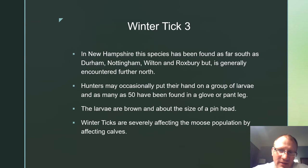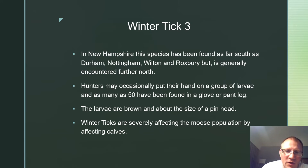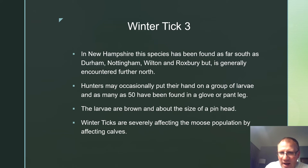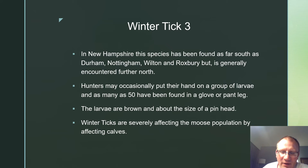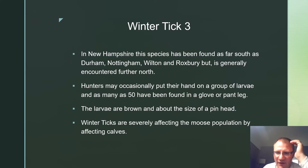In New Hampshire, the winter tick has been found as far south as Durham, Nottingham, Wilton, and Roxbury, but is generally encountered further north. Hunters may occasionally put their hand into a group of larvae, and as many as 50 of these ticks have been found on a glove or a pant leg. The larvae are brown and about the size of a pinhead. Winter ticks are severely affecting the moose population, particularly calves.